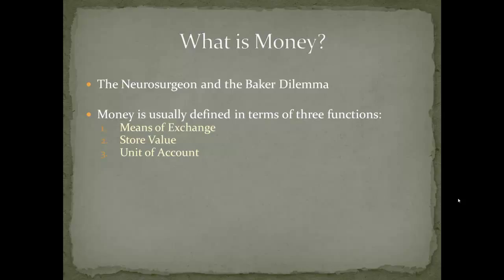We don't want a society where every time you want something you have to find something the other person wants. Instead, let's create a standard unit — a dollar, a pound, a euro — where the neurosurgeon can acquire these by doing his job and then spend them as he sees fit. When he goes to the baker, the baker will agree to exchange bread for this standard unit. Another problem is bread decays over time, and chickens die, so it's very difficult to store value in commodities. Money removes commodities and barter entirely, allowing us to store arbitrary amounts of value.